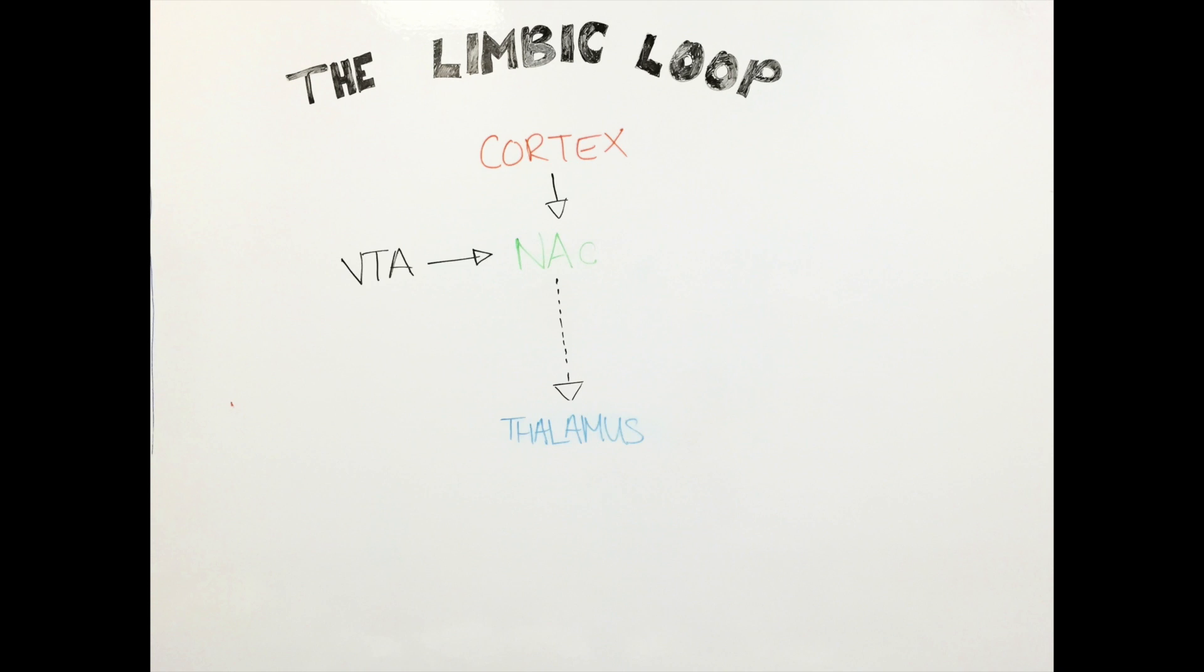Both the cortex and the VTA send information to the nucleus accumbens. The nucleus accumbens then sends information to the thalamus. The thalamus sends information back to the cortex, where it affects behaviors and emotions. But don't worry, we will come back to this later.